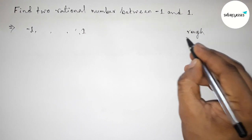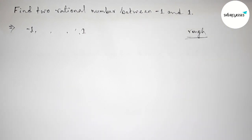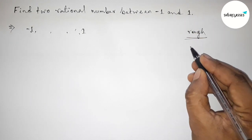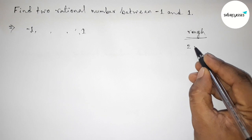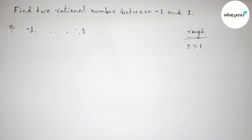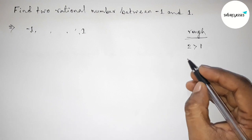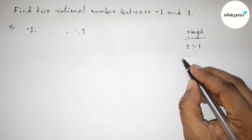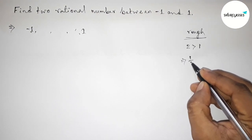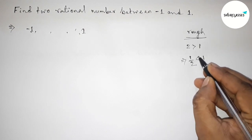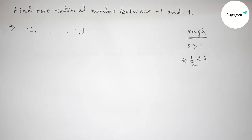Now, let's do some important calculation. First, take a number two, which is greater than one — so two is greater than one. Now taking the inverse of both numbers: inverse of two is one by two, and inverse of one is one. So one by two is obviously less than one. Therefore one by two is a rational number.